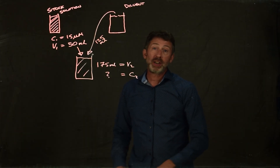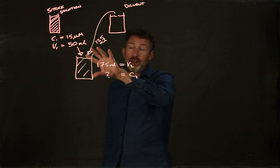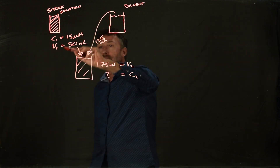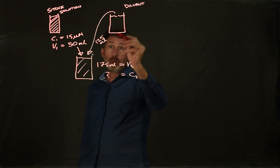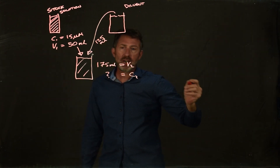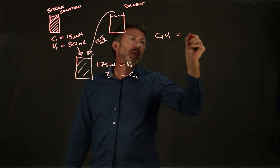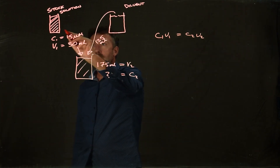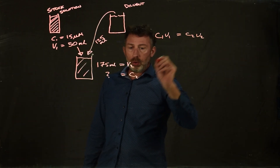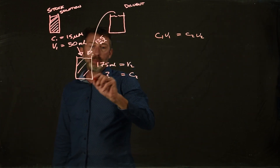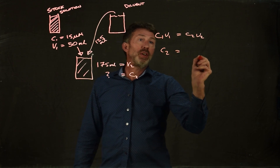Now let's take a slightly different example — one where we know what our stock solution is, we know how much of it we took, and we know what the final volume is. Here we can imagine that we took 50 mL of a 15 micromolar solution, put it in a container, and made it up to 175 mL — so we added 125 mL of diluent, which is buffer or deionized water. We want to know what the final concentration is. So C1V1 = C2V2: C1 is 15 micromolar, V1 is 50 mL, C2 is what we're trying to find, and V2 is 50 mL plus 125 mL, which is 175 mL.